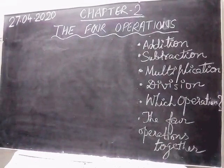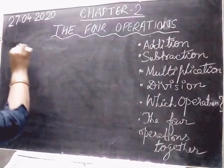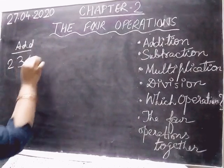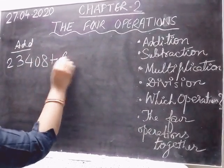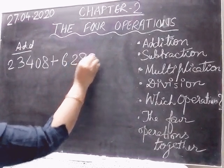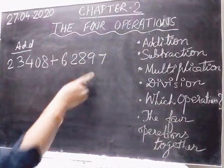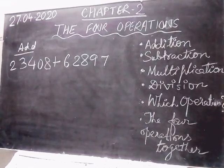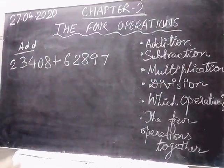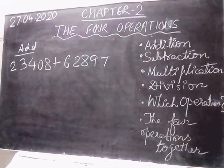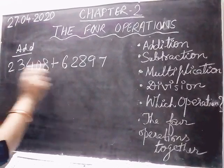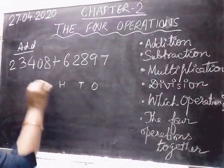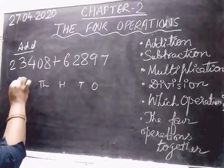Suppose we are asked to add 23408 plus 62897. When asked to add, you may get the instruction: arrange in column and add. We are now going to learn how to arrange in column. These are 5-digit numbers, so we write the place values: ones, tens, hundreds, thousands, ten-thousands.